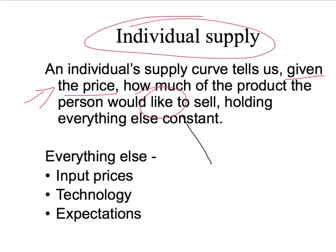Secondly, just like with our demand curve, our supply curve looks at what the person would like to do — it looks at somebody's plans, what they would propose to do, not necessarily what they can actually do. And thirdly, it's holding everything else constant. What do we mean by everything else? It could be the input prices — the amount you have to pay to get the inputs needed to produce what you're selling. It could be the technology you're using in your production, or it could be your expectations. If you think prices are going to be higher tomorrow, you may prefer to wait, sell more tomorrow, and sell less today.